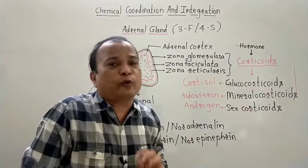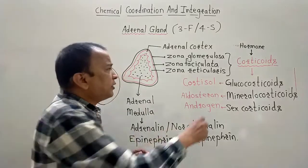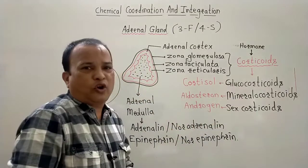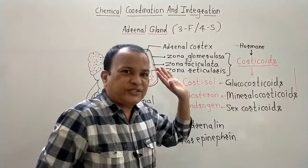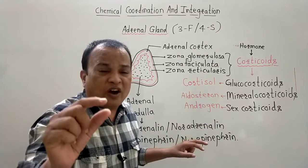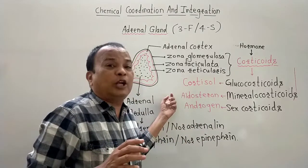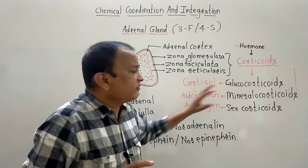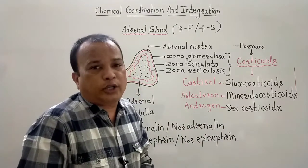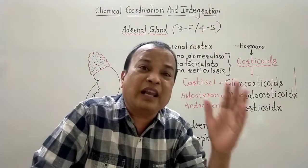There are three types of corticoids to keep in mind. The NCERT presents them in a scattered way, but systematically there are three: Glucocorticoids, Mineralocorticoids, and Sex Corticoids. The example of glucocorticoids is Cortisol. The example of mineralocorticoids is Aldosterone. And the example of sex corticoids is Androgen. All three are released from the adrenal cortex and each has a different function.